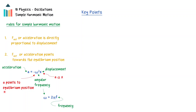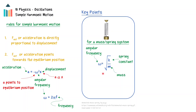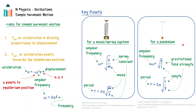Omega is the angular frequency of the system, equal to 2 pi times the frequency. The angular frequency is based on physical characteristics of the system. For a mass-spring system, the angular frequency is equal to the square root of the spring constant k divided by the mass m. For a pendulum, the angular frequency is equal to the square root of the gravitational field strength g divided by the length L. From these angular frequencies, the period of a mass on a spring is 2 pi times the square root of the mass divided by the spring constant, and for the pendulum, the period is 2 pi times the square root of the length divided by the gravitational field strength g.